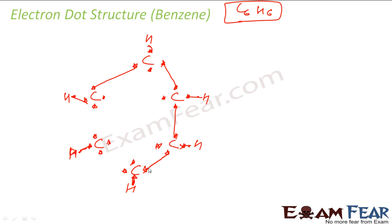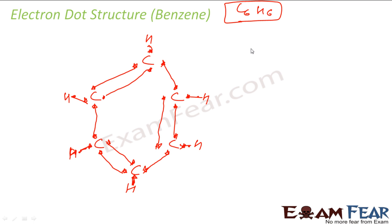Now there are still many free electrons remaining, so I join additional bonds between carbons. I join this carbon to this one, and this one to this, forming alternating double bonds in the ring. This gives me the electron dot structure of benzene with alternating single and double bonds between the six carbons.